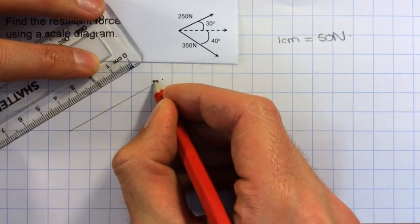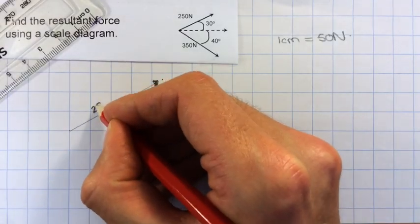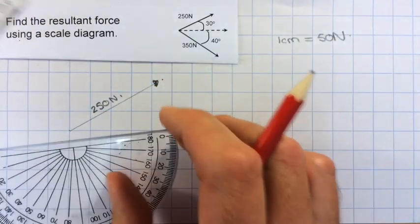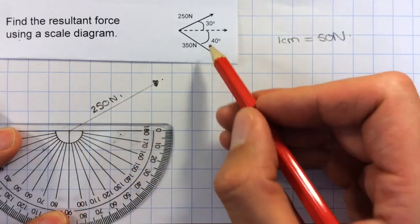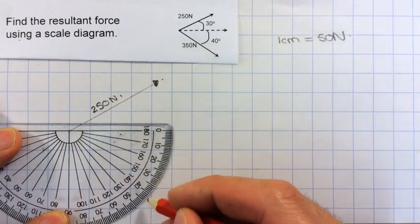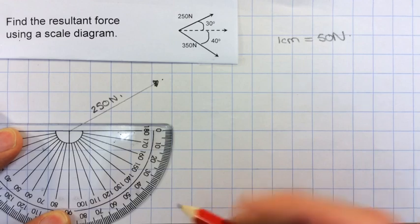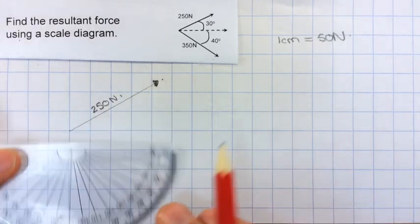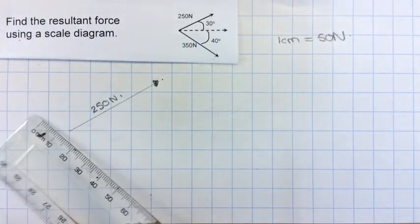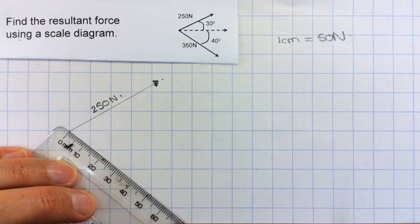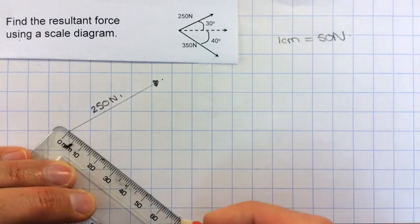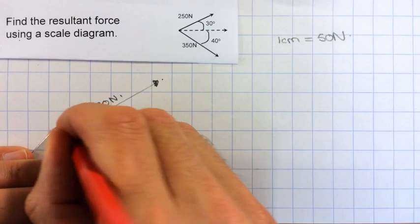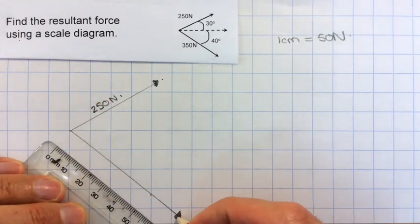Put my arrowhead on it, label that 250 N, and then I'm going to do my 350 N force at 40 degrees. Remember, because I'm using the parallelogram method, I start both vectors from the same place, and I need to draw this out as 7 cm which I think just fits onto my piece of paper.